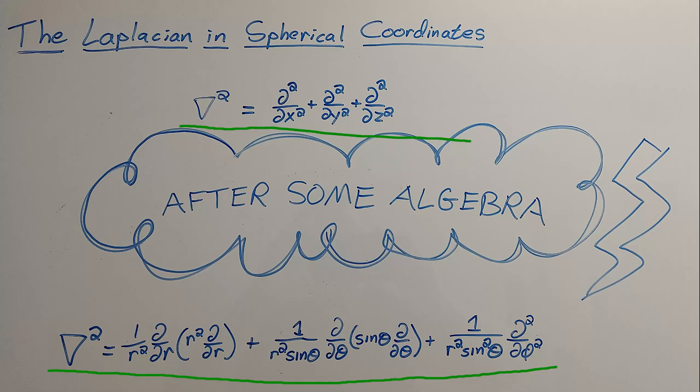Going from one to the other in the end isn't actually that bad. There's a lot of terms to keep track of, so you got to be careful not to pooch a minus sign or switch a sine for a cosine.